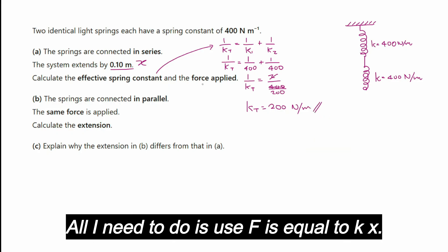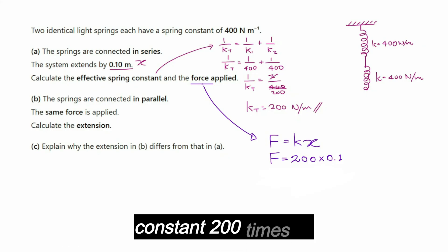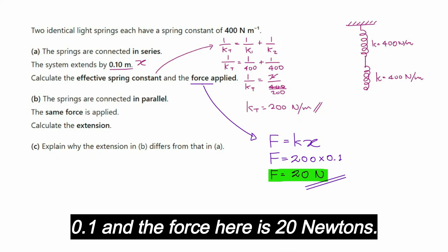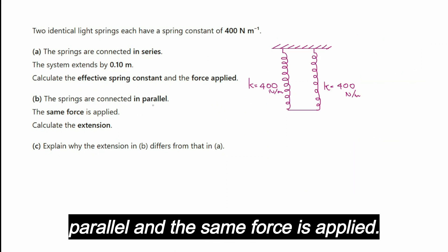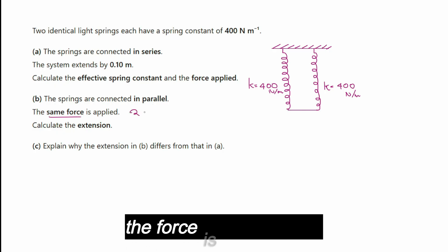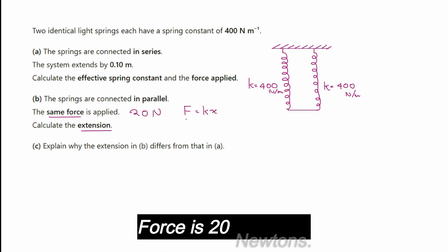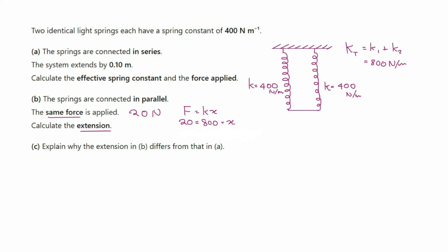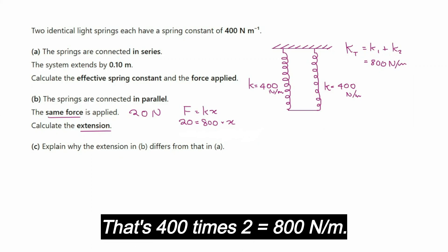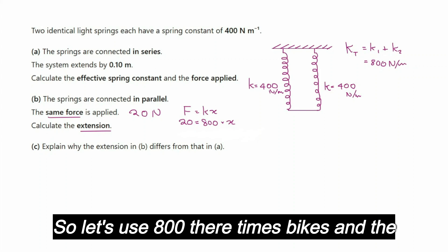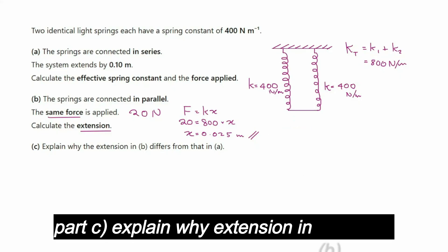For part a, the force applied: using F equals kx, the spring constant is the effective value of 200, multiplied by 0.1, giving F equals 20 N. For part b, the springs are connected in parallel with the same 20 N force applied. When in parallel, k-total equals 400 plus 400 equals 800 N/m. Using F equals kx: 20 equals 800·x, so the extension is 0.025 m.